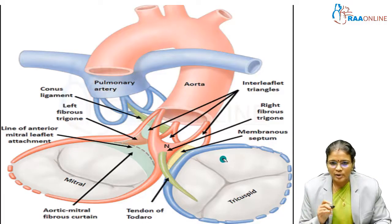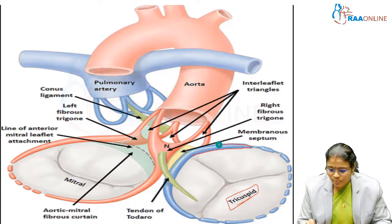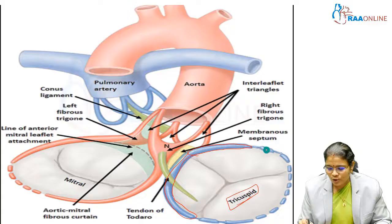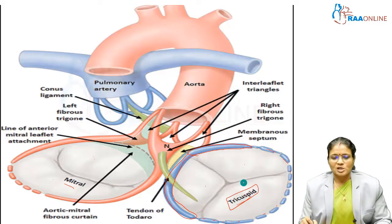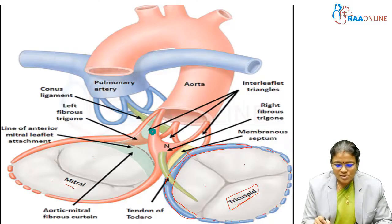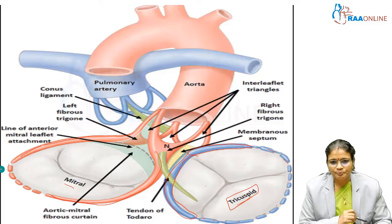Looking at another picture: the tricuspid orifice has a valve or annulus made up of two prongs called philia coronaria, and between the two philia coronaria there is a sulcus filled with connective tissue called sulcal connective tissue. The mitral orifice is made up of two valves — the bicuspid valve with two cusps — and is also made up of two philia coronaria connected by sulcal connective tissue.